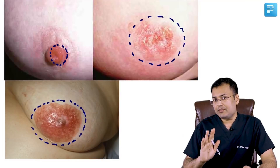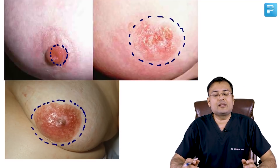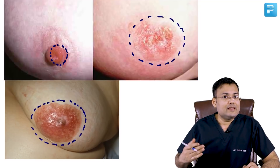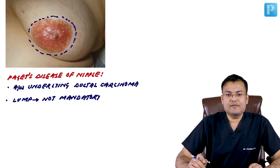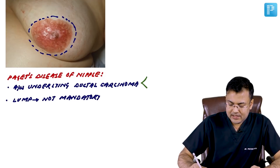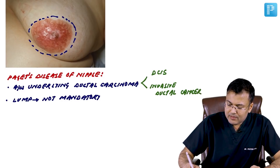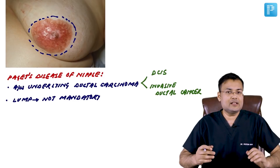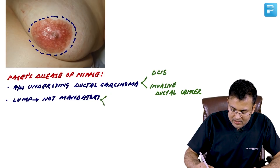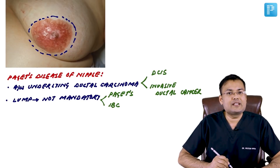In Paget's disease of the nipple, there is underlying malignancy — sometimes DCIS (ductal carcinoma in situ) and sometimes invasive ductal cancer. An important point: presence of a lump is not mandatory for the diagnosis of Paget's disease of the nipple. Similarly, in inflammatory breast cancer, presence of a lump is also not mandatory.